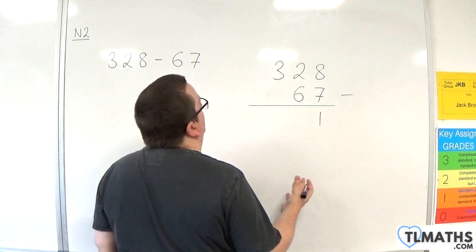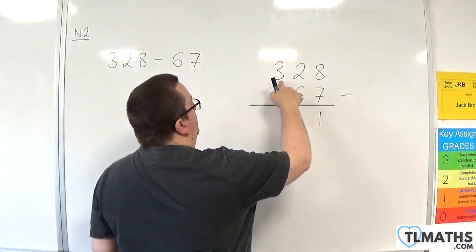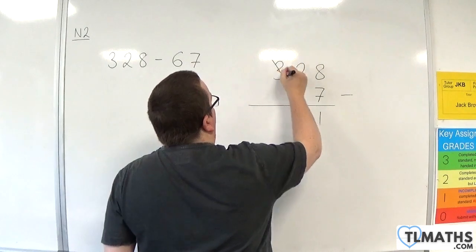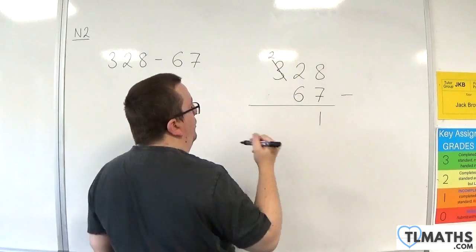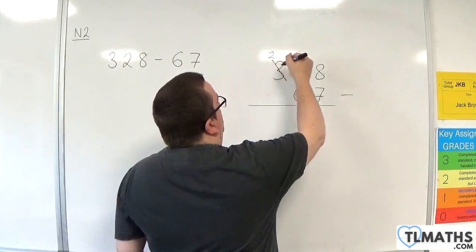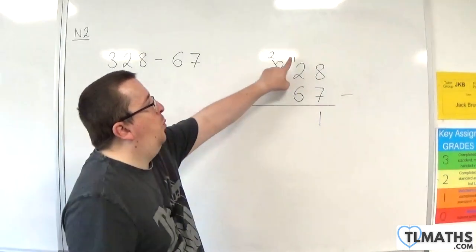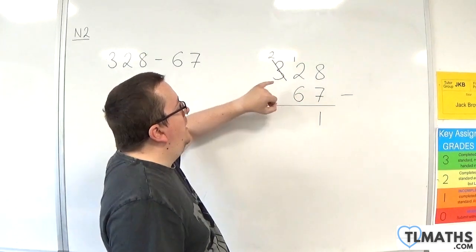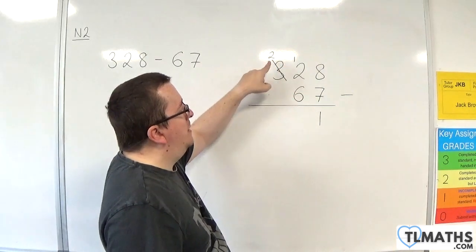So what I'm going to do is borrow from the next number along. Essentially what we're going to do is take one away. So I cross it through and replace it with 2. And the 1 that I've borrowed now goes above the 2. So this forms 12. So I've borrowed 1, brought it over here, and the 3 has now become 2.